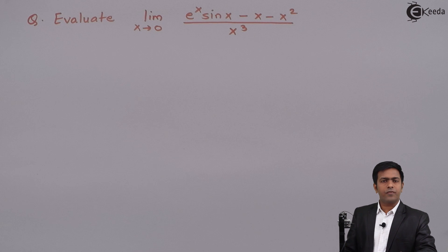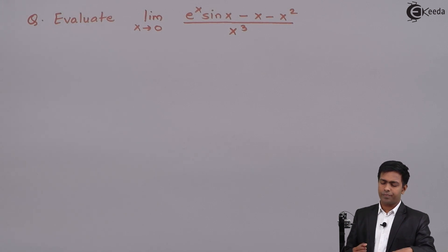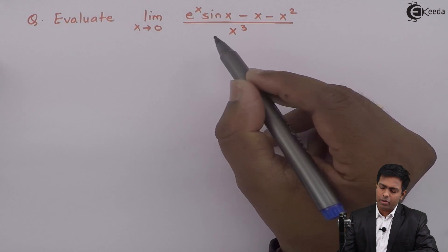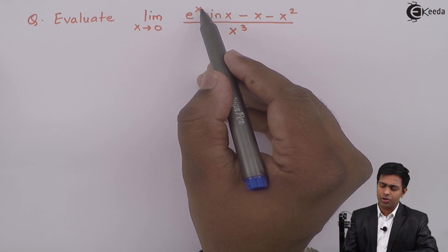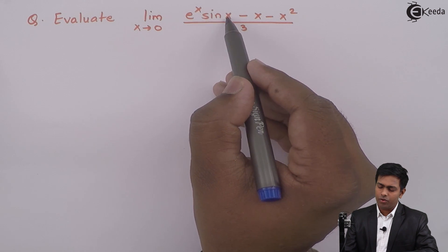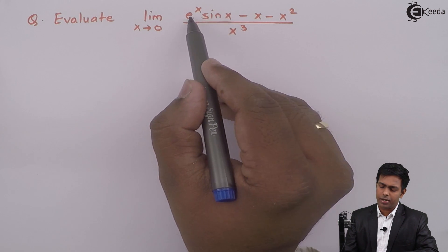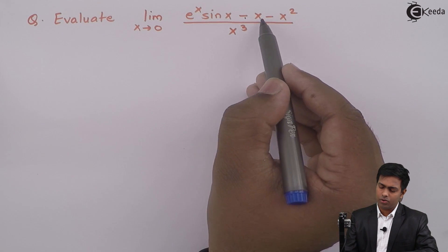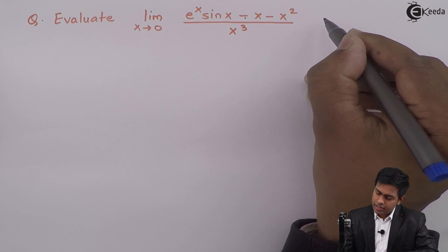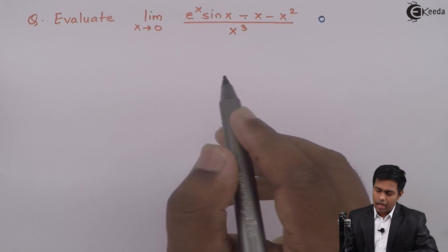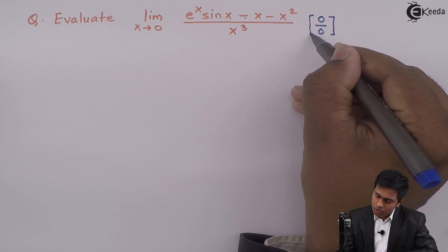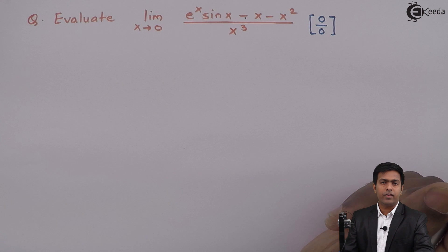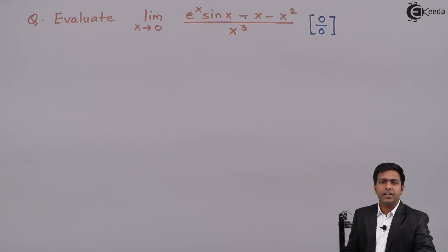First, we will check what we get when we substitute x as 0 in the numerator and denominator. Substituting x as 0 gives e raised to 0 is 1, sin 0 is 0, so the numerator becomes 0 minus 0 minus 0 squared, which is 0. The denominator gives 0 cubed, which is also 0. So we are getting 0 upon 0, which is an indeterminate form.